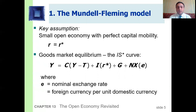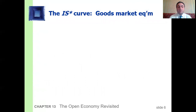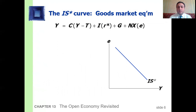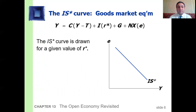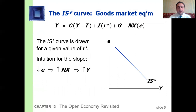The world IS curve represents goods market equilibrium. The IS curve is drawn for a given value of the world interest rate. As the interest rate decreases, net exports increase, and as a result output and income increase. We have now added net exports to the IS curve equation, since we are talking about an open economy.